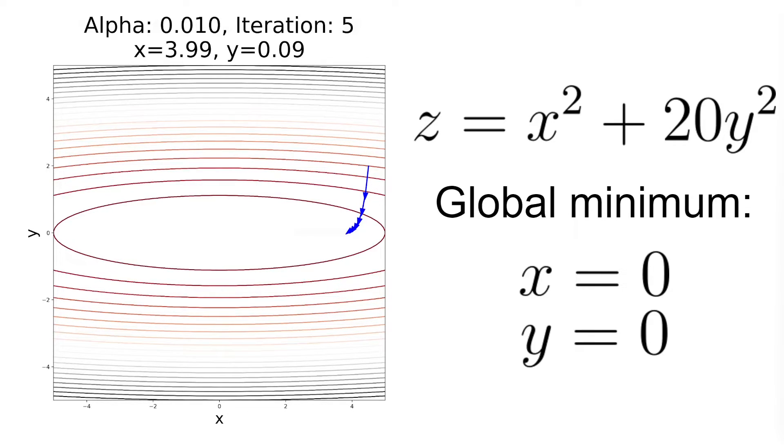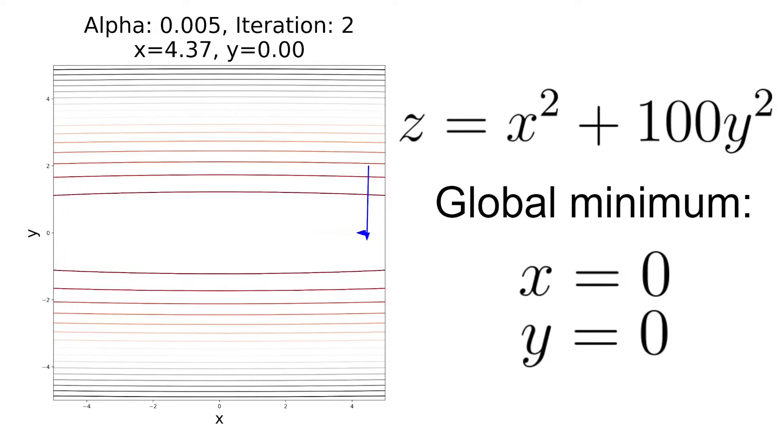Unfortunately, on the x-axis the learning rate is too small and the algorithm converges really slowly. Also, if we increase the coefficient of y then we have to decrease the learning rate alpha even more to have a stable convergence, which in turn will make the convergence on the x-axis even slower.